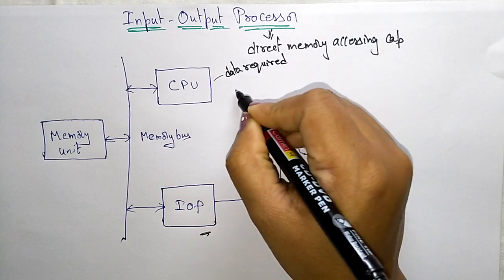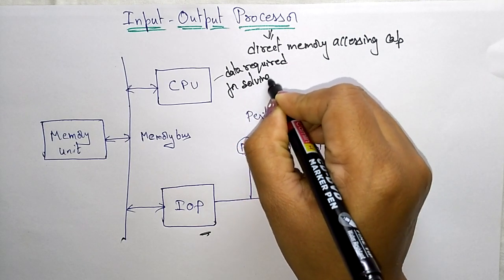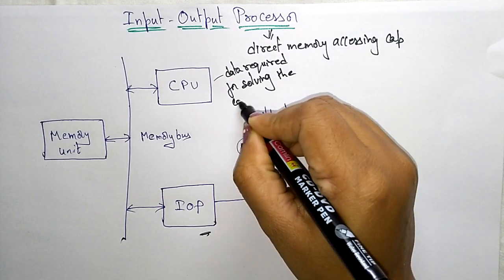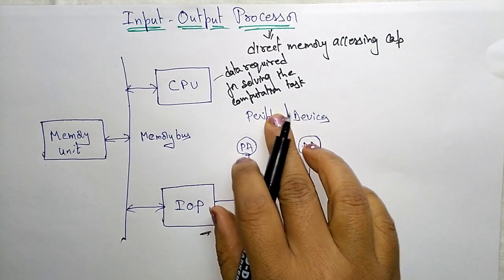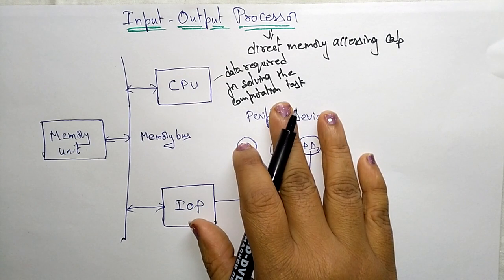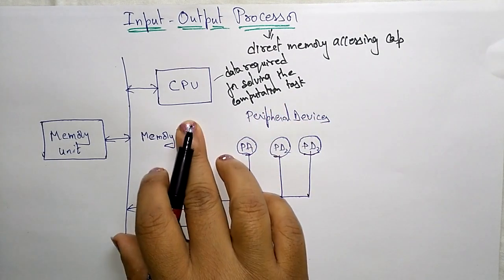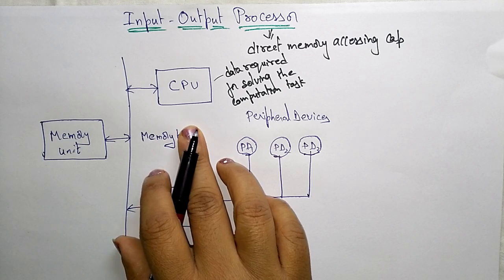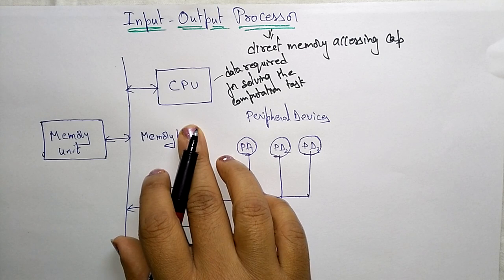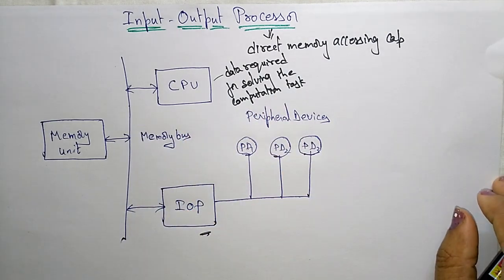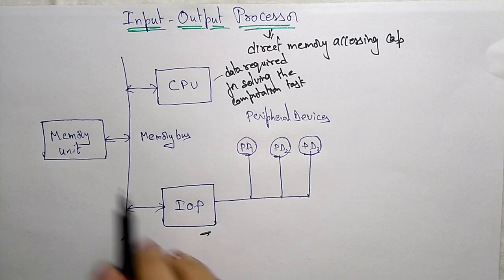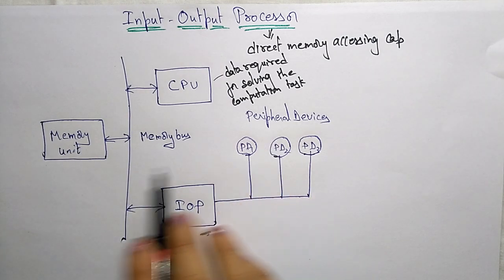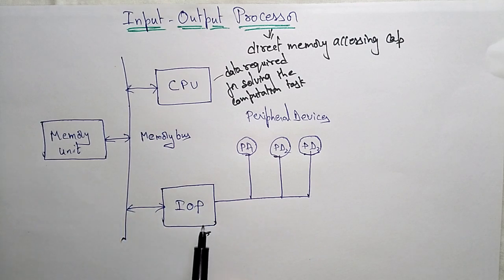The CPU processes the data required for solving computational tasks. Whatever data is needed to solve a computational problem, the CPU handles that requirement. The Input-Output Processor, on the other hand, provides a path for transferring data between peripherals and memory, acting as an interface between peripheral devices and the memory unit.